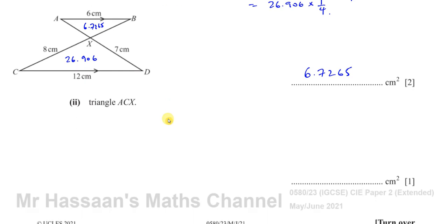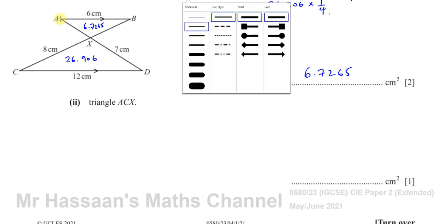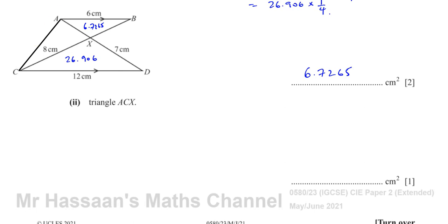Part D says find the area of triangle ACX. We have the areas of ABX and DCX, and now must find ACX. I draw a line between A and C. This question looks tough but is only worth one mark, so there's a quick method. If I focus on triangles ACX and ABX, they both share the same vertical height.